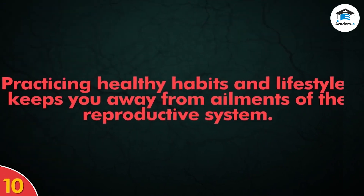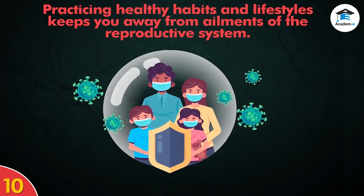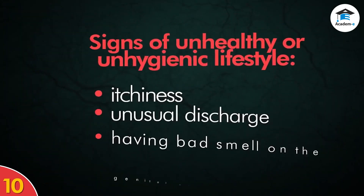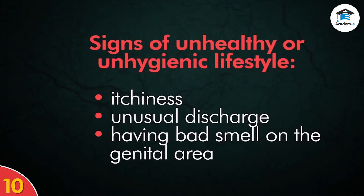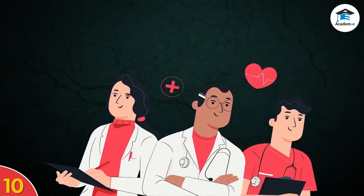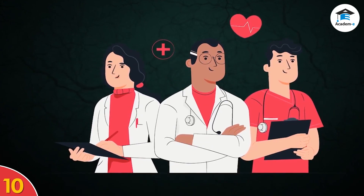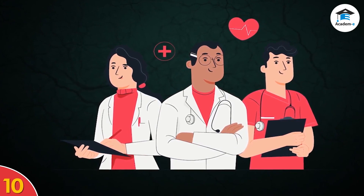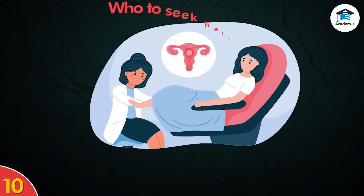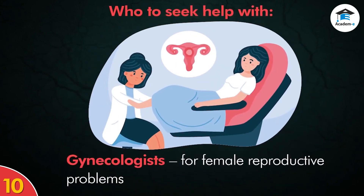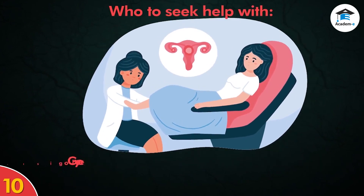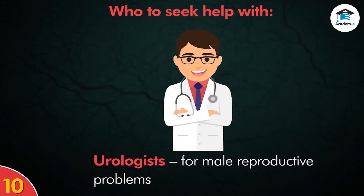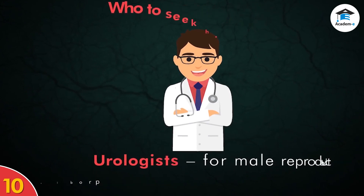Practicing healthy habits and lifestyle keeps you away from ailments of the reproductive system. Itchiness, unusual discharge, and bad smell in the genital area can be signs of an unhealthy or unhygienic lifestyle. See a doctor or physician if these symptoms do not go away or become worse even after practicing healthy and hygienic habits. Gynecologists help females with their reproductive problems, while urologists help males with their reproductive problems.